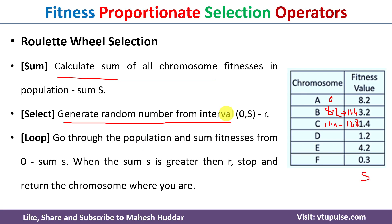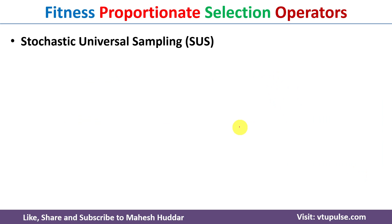If we generate a random number equal to 7, chromosome A will be selected as a parent. If we generate a random number equal to 9, chromosome B will be selected as a parent. For the required number of parents, we generate a random number each time, check which cumulative range it falls in, and select the corresponding chromosome.